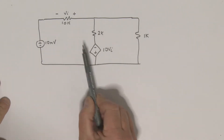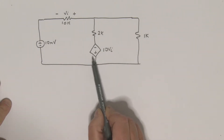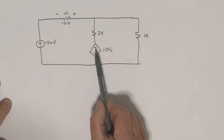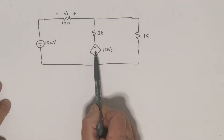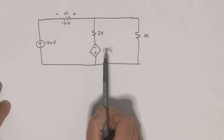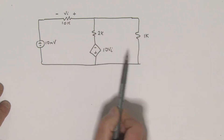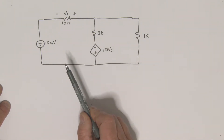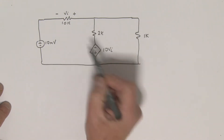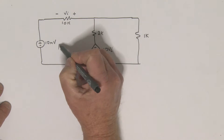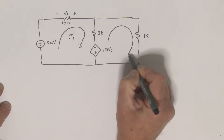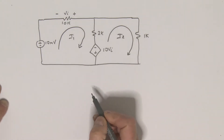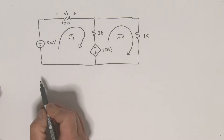Let's look at another example. In this case we've got a voltage source — this is a dependent voltage source, and it's dependent upon this voltage over here, so this is a voltage-dependent voltage source. We really want to find the currents and voltages in this problem. This lends itself to a mesh approach, so we can define a mesh current i1 and a mesh current i2.